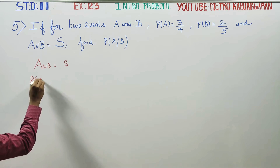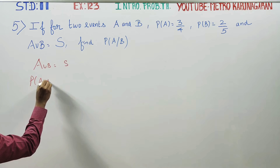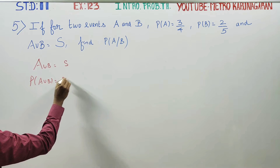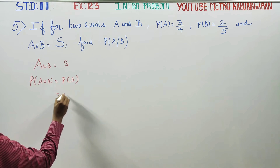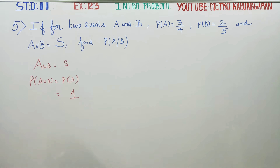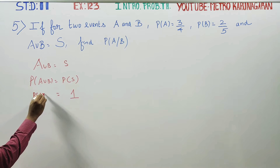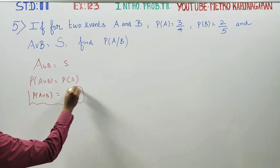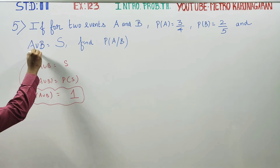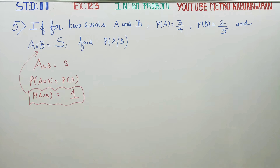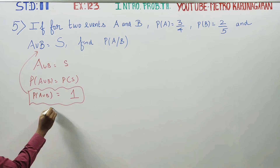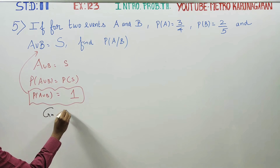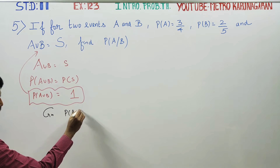Since A union B is equal to the sample space, probability of A union B is equal to probability of the sample space. Probability of the sample space is 1, so it is given that probability of A union B is equal to 1.